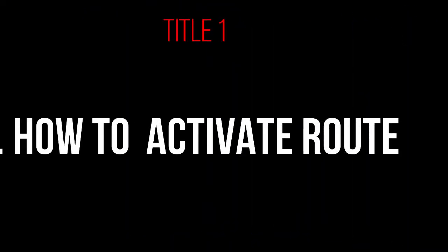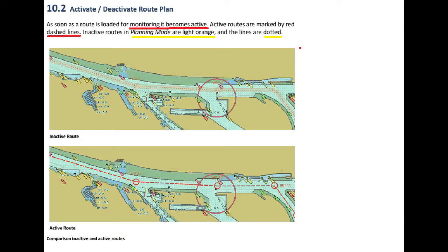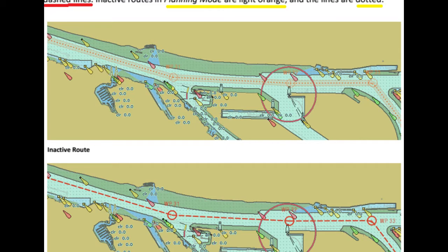Unlike other ECDIS systems, for example Mariners where you load the root and then right-click to activate it, that is not the case in this chart world system. Once the root is loaded, it gets activated by itself. To distinguish between a loaded active root and inactive root: if the root is activated it will be shown in red and in dashed line; if the root is not active it will be shown in orange color and in dotted line.